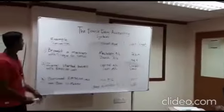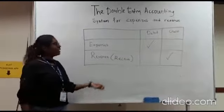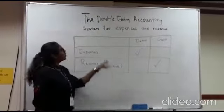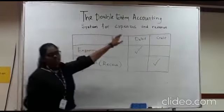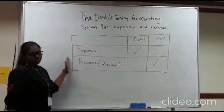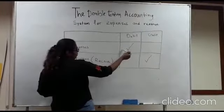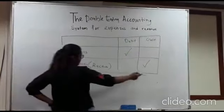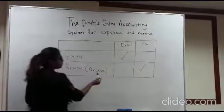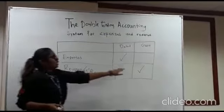This is an example of the transition of the double entry system. One of my friends explained about the double entry accounting system. Now I'm going to explain about the double entry accounting system for expenses and revenue. This is the formula for expenses and revenue. For expenses, it's going to be on the debit side. For revenue, it's going to be on the credit side. If you see the word 'receive' in your question, receive means it's on the credit side.